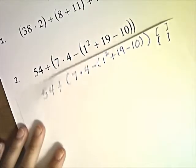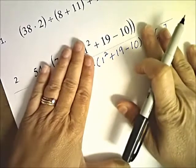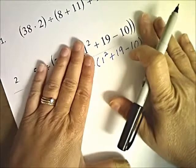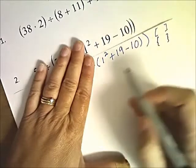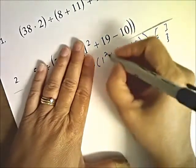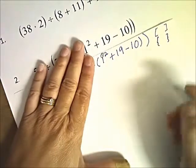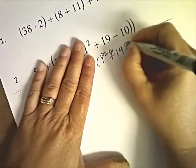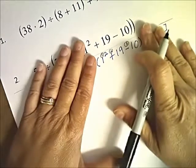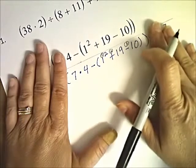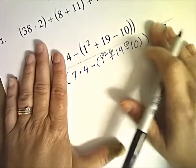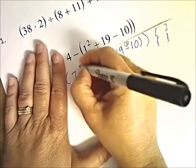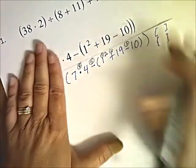We know we have to work the innermost parentheses first. Inside the innermost parentheses we see 1 squared plus 19 minus 10. We can't solve that until we do the exponents, so we'll do 1 squared first, then add second, subtract third. That solves those inner parentheses. Next we look outside to the next set of parentheses — we see multiplication and subtraction there. Multiplication will be our fourth step, subtraction our fifth. Then we go back and do our sixth step with the division.